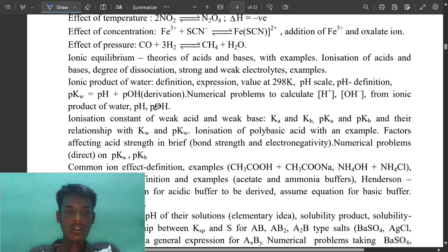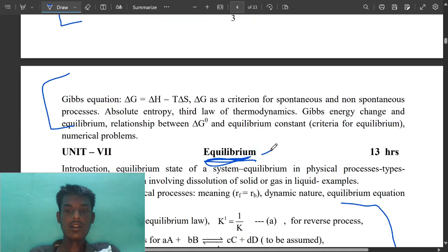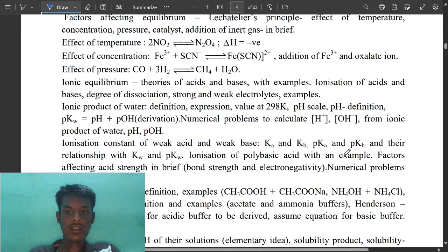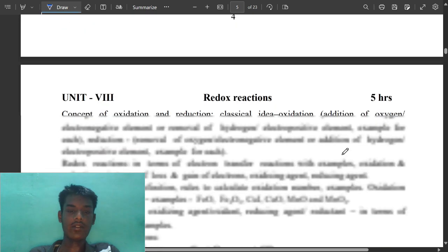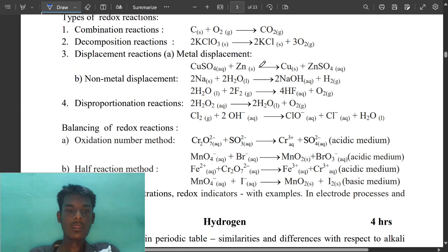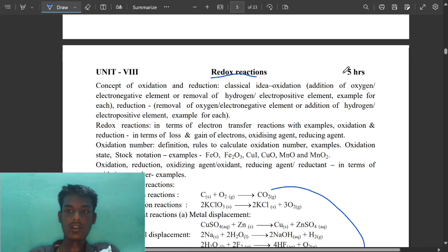Derivation - pKw equals pH plus pOH. If you know this, it contains two digit marks. Very important. We have to read it very carefully because in this chapter everything is important. Redox reactions, very important. You can see only these questions are enough to score out of four from this chapter because it has only five hours. They ask max three marks in this chapter.